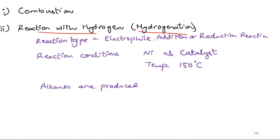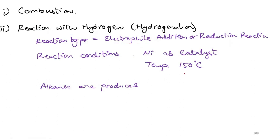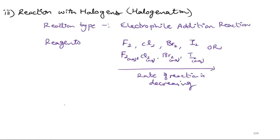Hydrogenation is an electrophilic addition or reduction reaction. The reaction conditions are: nickel is used as catalyst, temperature 150 degrees Celsius, and alkanes are produced. After that, the reaction with halogen is halogenation. This is also an electrophilic addition reaction. The halogens used are fluorine, chlorine, bromine, and iodine.